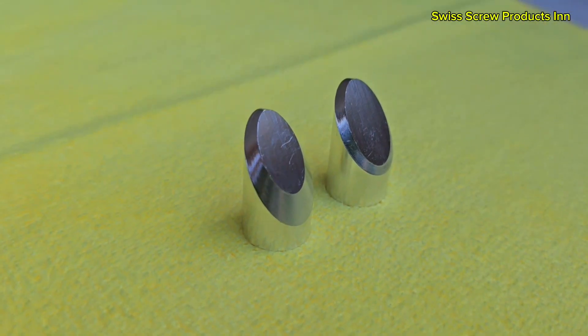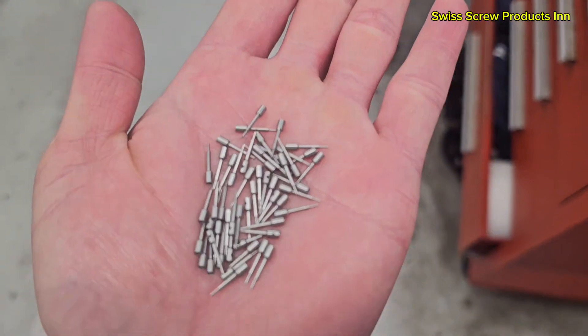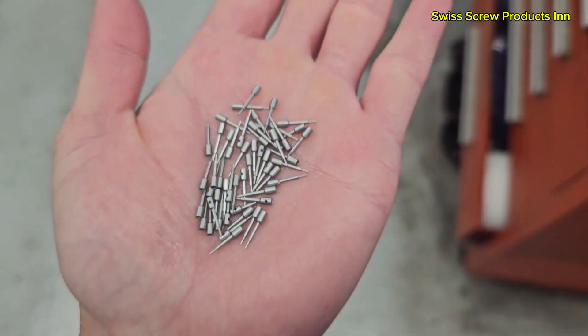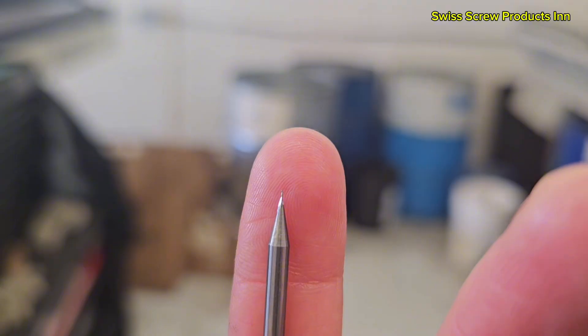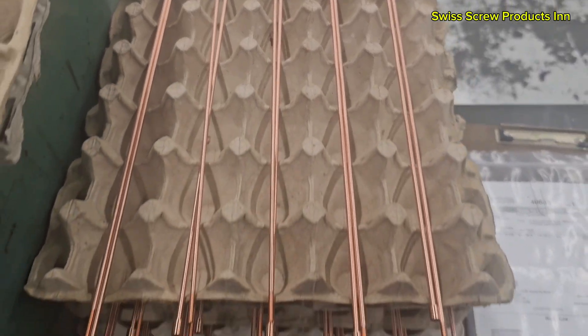In electronics, you'll find Swiss machined parts in connector pins, signal contacts, and RF microwave components. These parts are often less than an inch long but require multiple features and ultra-tight tolerances.